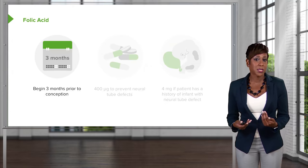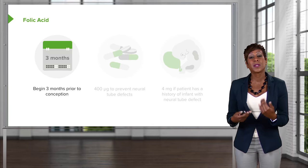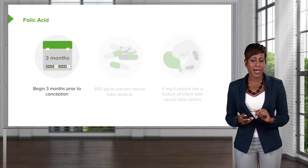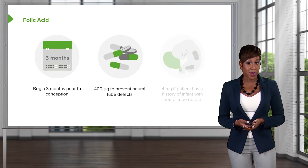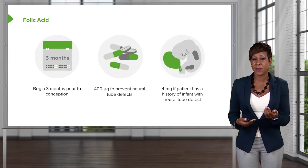When thinking about preconception care, one of the big points is folic acid. We often recommend prenatal vitamins, but the key component our patients need is the folic acid. It's really important that this begins about three months prior to conception. Folic acid is critical to prevent neural tube defects. The recommended amount is 400 micrograms for a normal pregnancy. However, for women who have had a pregnancy affected by a neural tube defect, or if they're taking medications that can lower their folic acid levels, we recommend four milligrams.